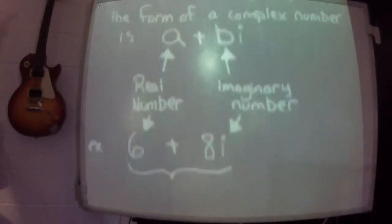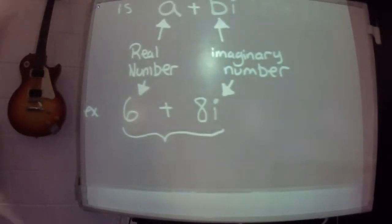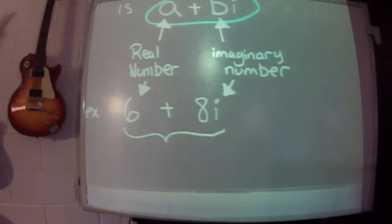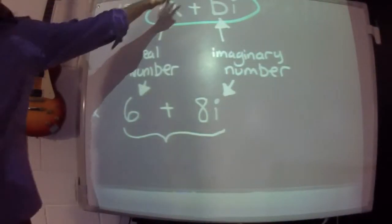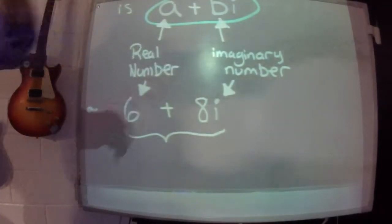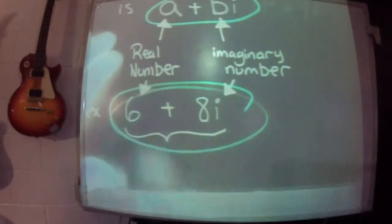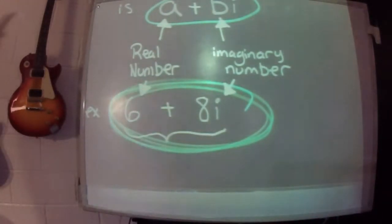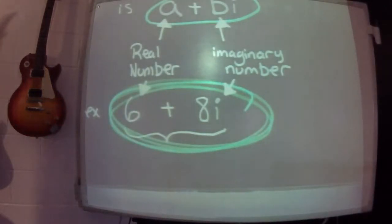So when we do a complex number, what did it look like? It'll be some real thing, and then a plus or minus sign, and some imaginary thing. So a real number, and then an imaginary number. The two things together, like I circled, make up what we call a complex number. It's a two-part thing, and you can't put real things and imaginary things together.